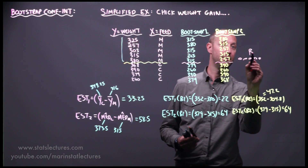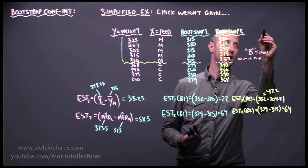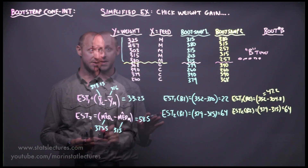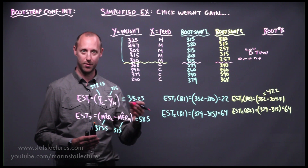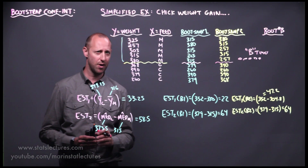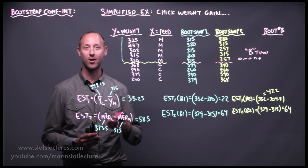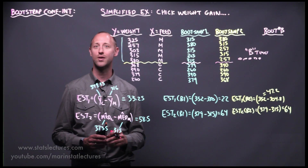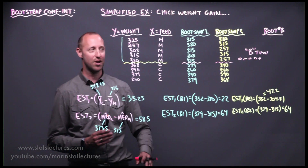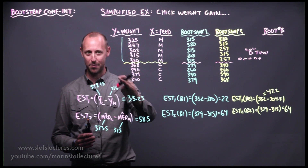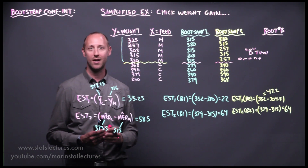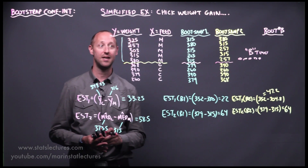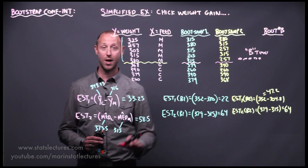The bootstrap approach repeats this B times, up to bootstrap sample number B, yielding B different bootstrap estimates. A rough guideline for B is 10,000 or more, and the only real limitation is computing power. An important note: increasing B, the number of resamples, does not increase the amount of information in the data. With only nine observations, running a billion bootstraps still only uses the power of those nine observations. Increasing B gives a more reliable estimate of the standard error but does not gain new information.